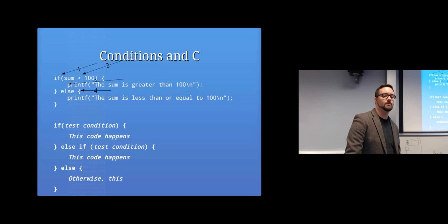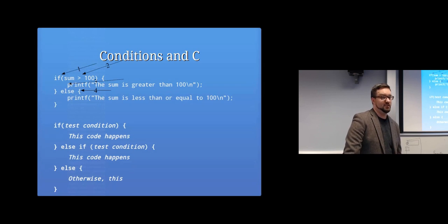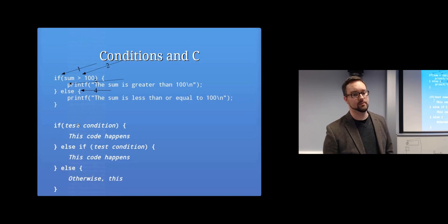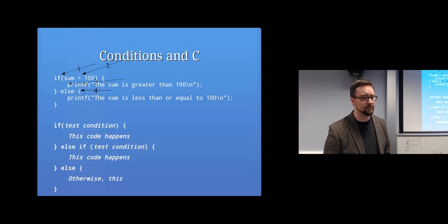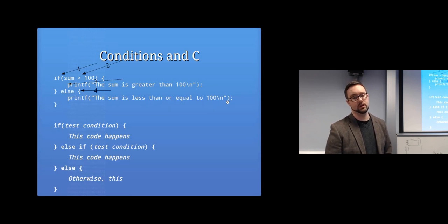Some conditions: if sum is greater than 100, you've got 'if' and then in brackets what you're testing for, and in curly braces what happens if it's true. Then 'else' handles what happens otherwise. So if the sum was greater than 100, print that it was greater than 100; else, if less than or equal to 100, print that. Pretty straightforward.